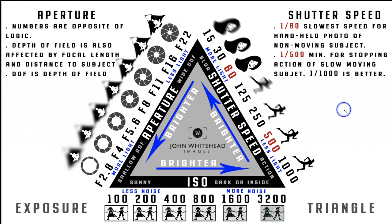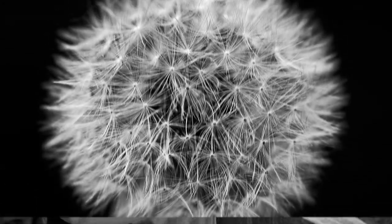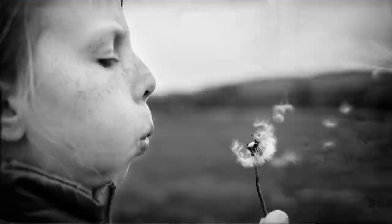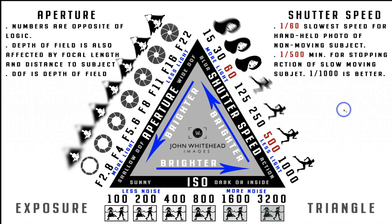Welcome back. Today we're going to be taking a look at the exposure triangle in photography. Whether you're learning how to shoot on manual, automatic, or semi-automatic mode, it doesn't really matter — understanding the exposure triangle and the three different aspects used inside of the camera to regulate your exposure as well as other functions is important.